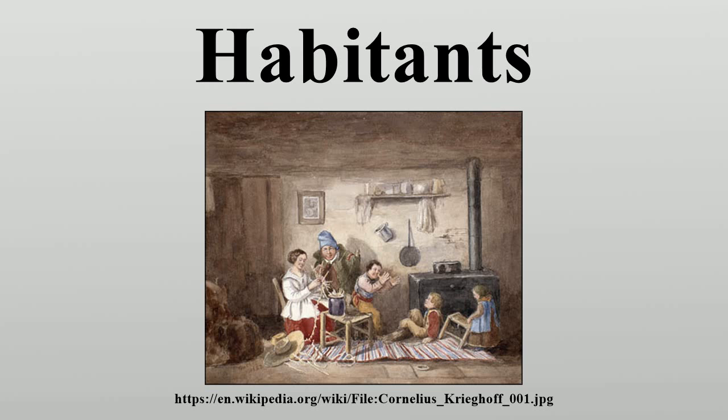The habitant-seigneurial relationship that emerged in New France, however, had a few key differences from its Old World counterpart. The wealth of the land was primarily built through its development by the habitants. King Louis XIII instituted a condition on the land stating that it could be forfeited unless it was cleared within a certain period of time. This condition kept the land from being sold by the seigneur, leading instead to its being sub-granted to peasant farmers — the habitants.